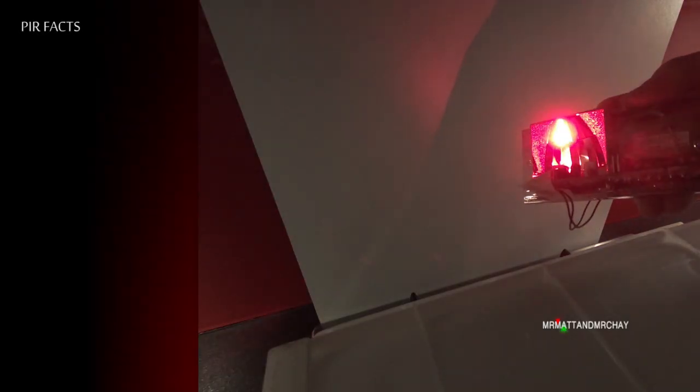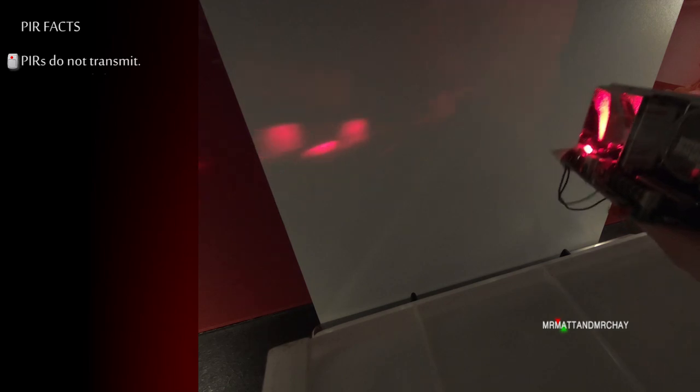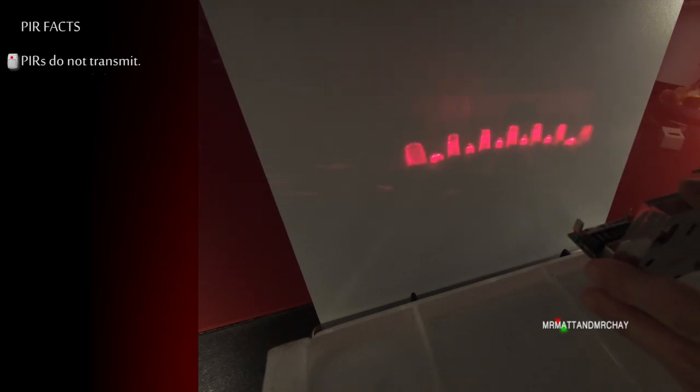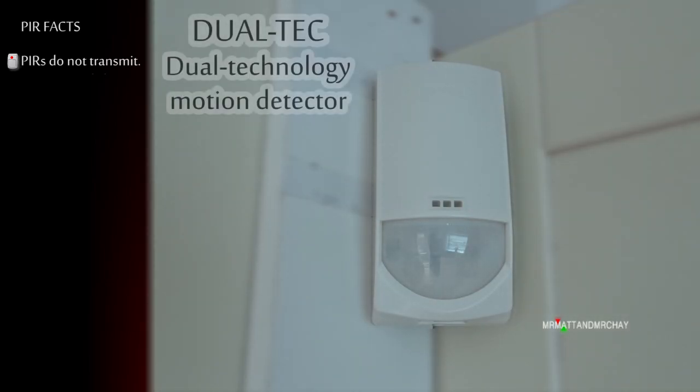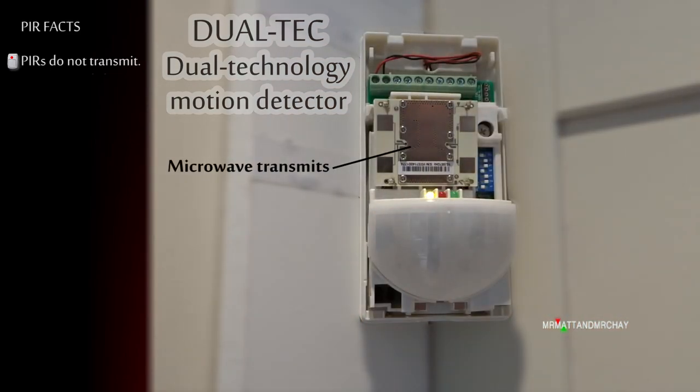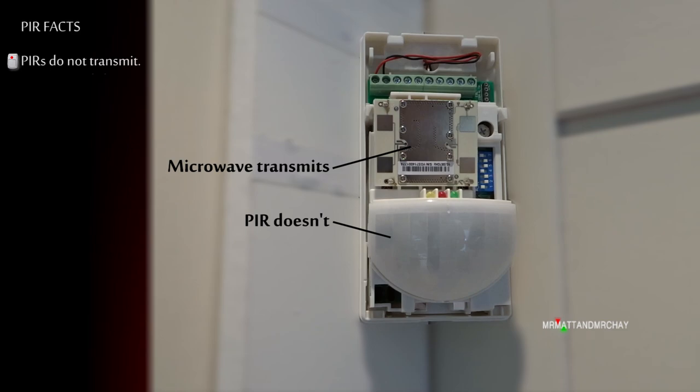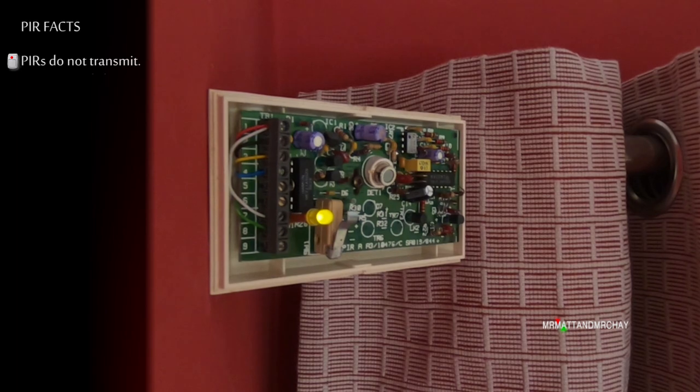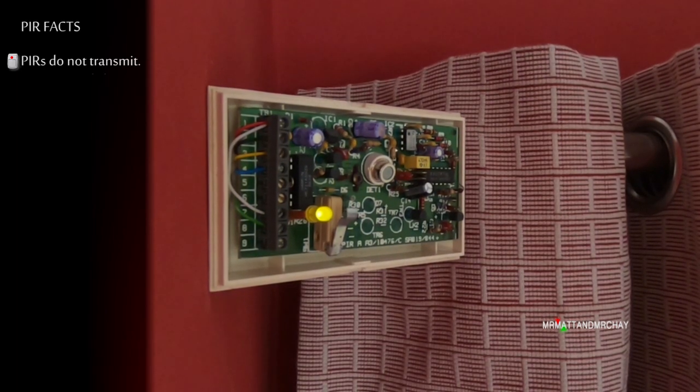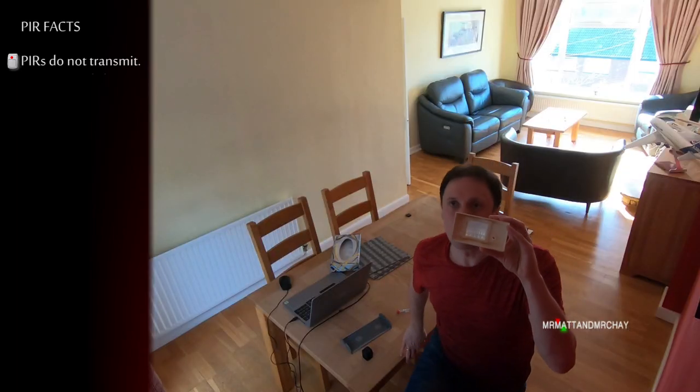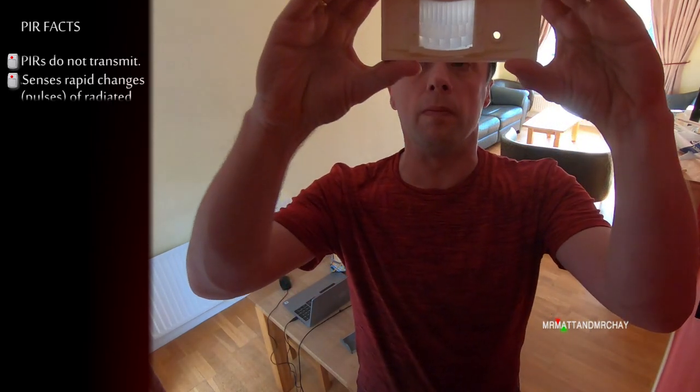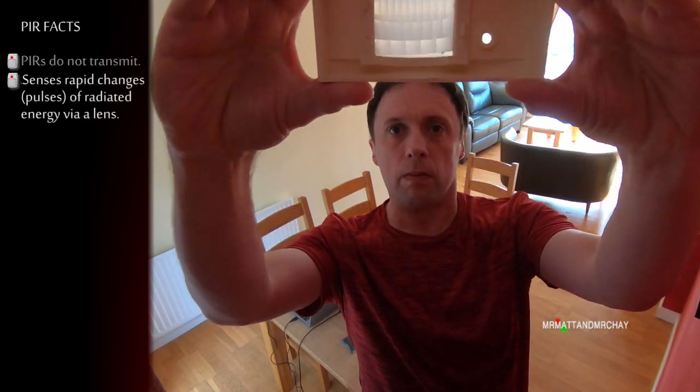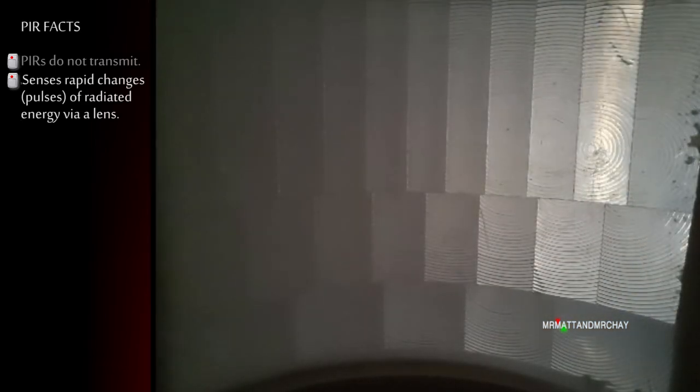PIR facts. A PIR does not transmit anything. This is an exception to this device, which is a Dualtech. This has a PIR and also a microwave, but today we are just talking about the PIR element itself. A PIR detects motion by sensing rapid changes of radiated energy via its lens system, which I'm coming back to in great detail in a moment.